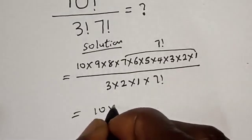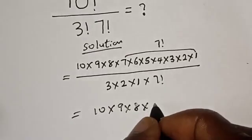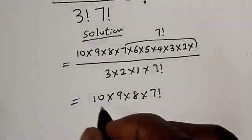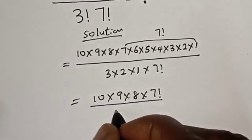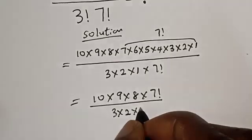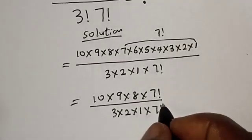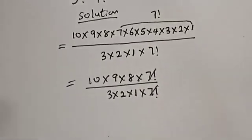10 times 9 times 8 times 7 factorial over 3 times 2 times 1 times 7 factorial. This 7 factorial, we cancel this 7 factorial.